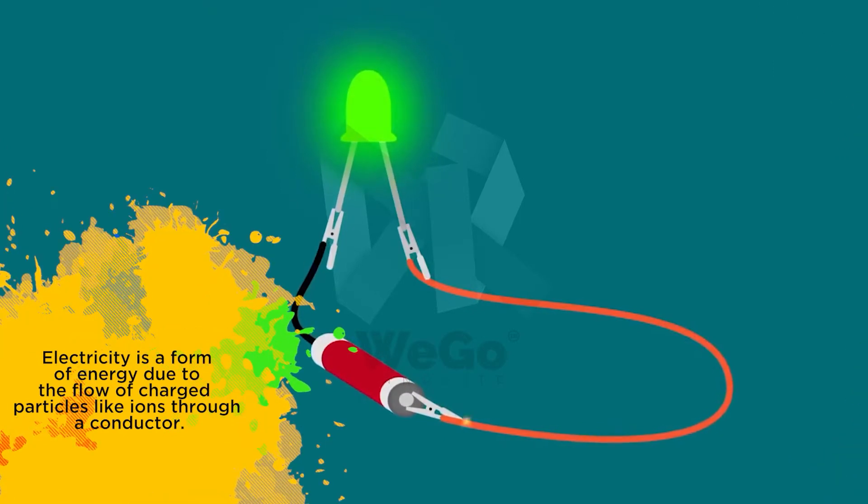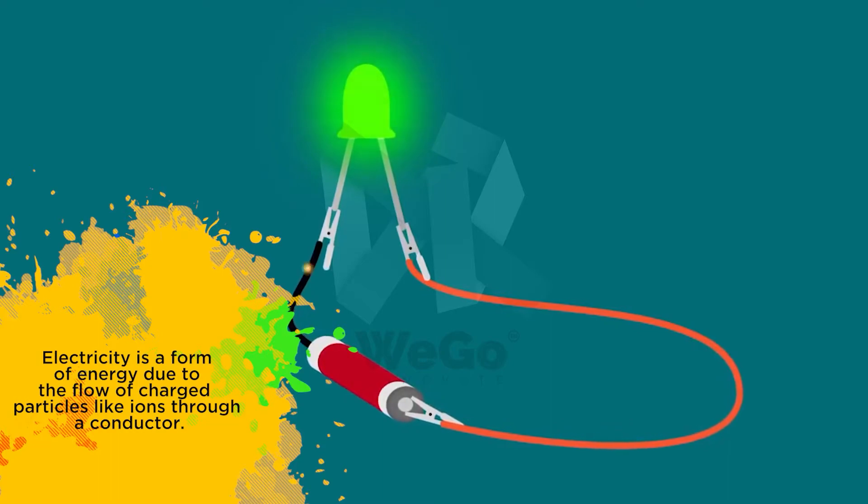Electricity is a form of energy due to the flow of charged particles like ions through a conductor.